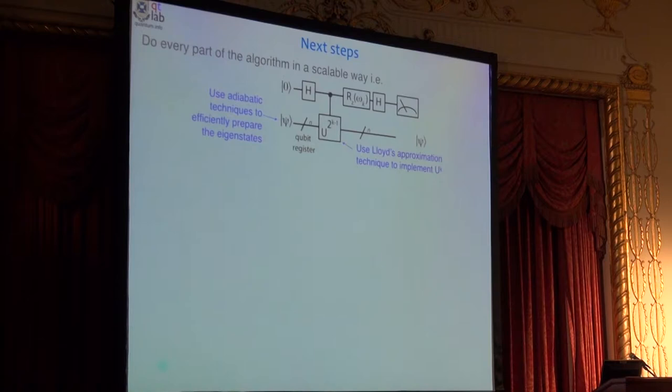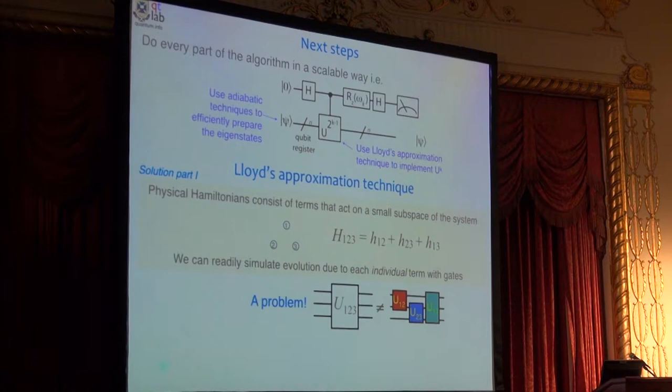This is the kind of circuit you build. Notice two things about it. The top thing is there's a single control qubit, comes in zero, gets put into superposition of zero, one. And there's a register that you program, and then you throw away. And then you read out the top qubit.